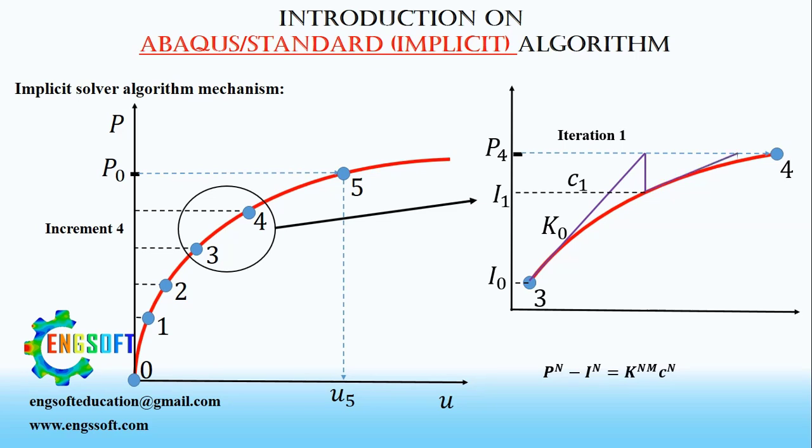Solver might need to repeat this procedure and correct the displacement several times to reach the solution, or to converge. Every try to correct the predicted displacement is known as iteration.